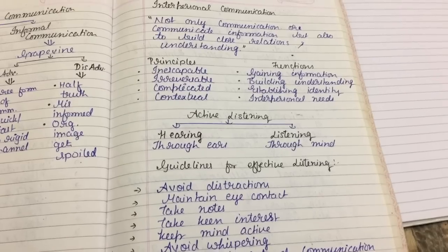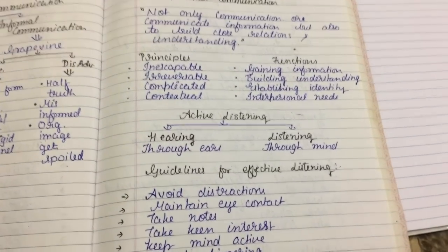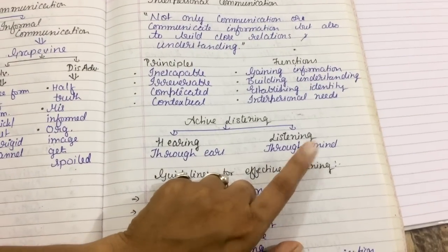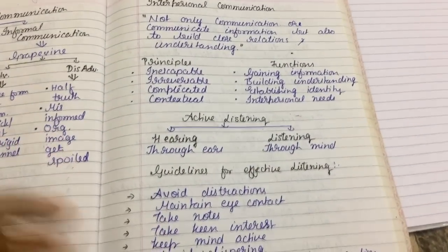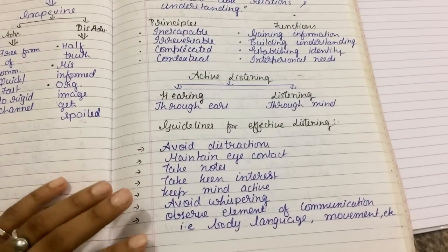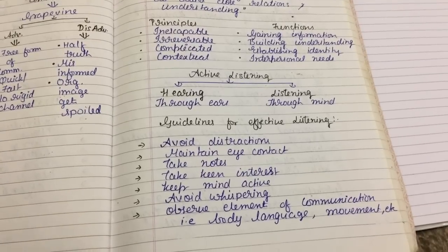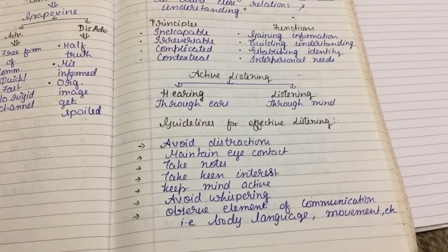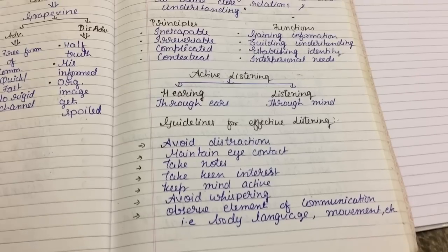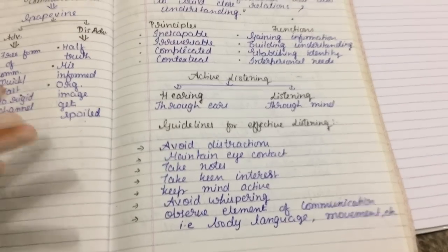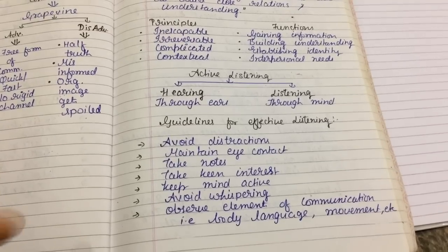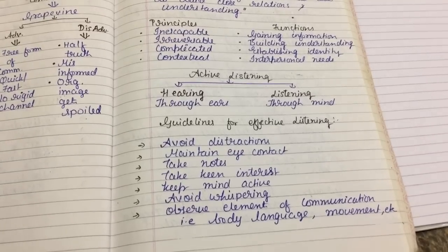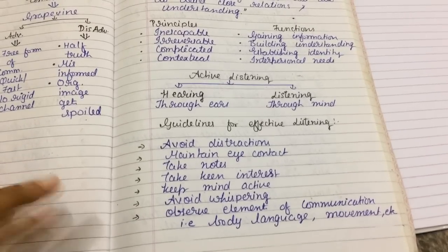The last topic today is active listening. There is a difference between hearing and listening. Hearing is only through the ears — a person is talking and you are hearing but not taking it in or understanding it. Listening is when you understand through your mind. For example, in a classroom when a lecture is going on, you may be there physically but mentally somewhere else, daydreaming. That is hearing, not listening. Listening is when you understand every word thoroughly.